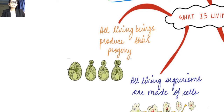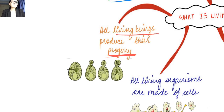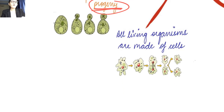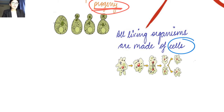The second property is that all living beings produce their progeny — this is reproduction. Third, we have the fact that all living organisms are made up of cells, so cellular organization is one of the defining features.